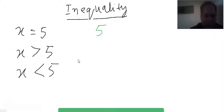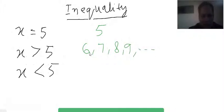x greater than five means the solutions are six, seven, eight, nine, and onward — all these numbers are solutions of this inequality. To understand what it means for these to be solutions, suppose we take six and put it in for x.